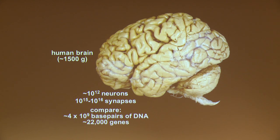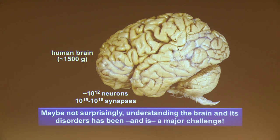Progress in the last decade has enabled deciphering the sequence of the human genome, and we now have a pretty good idea of what it looks like — though we still don't fully understand it, even though its complexity is so much lower than the brain's. Understanding how the brain works, and how brain disorders and diseases affect it, remains a major challenge.